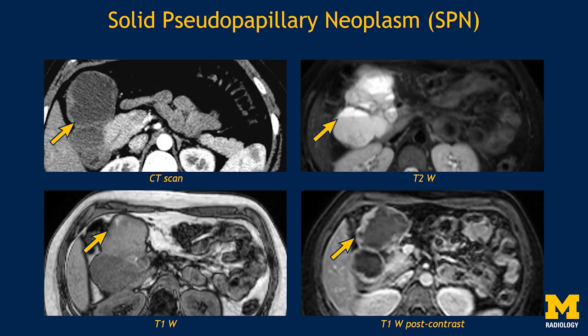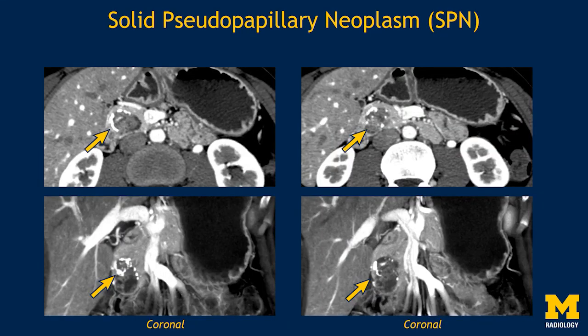This is an example of a solid pseudopapillary neoplasm which on initial look might appear as a large cystic lesion, seen on T2-weighted images as a cystic T2 hyperintense lesion with multiple fluid-fluid levels. However, if we closely look at the contrast-enhanced CT and MR examination, there are nodular solid enhancing components along the periphery, suggesting this is a solid lesion with cystic change. Another example appears more complex with cystic areas, solid components, and areas of calcification.